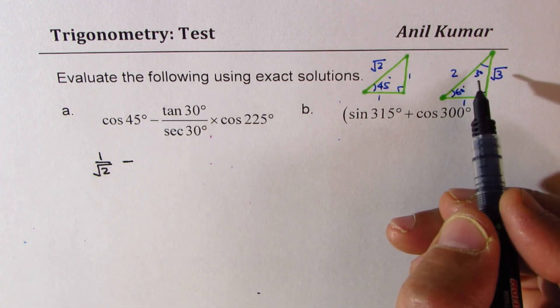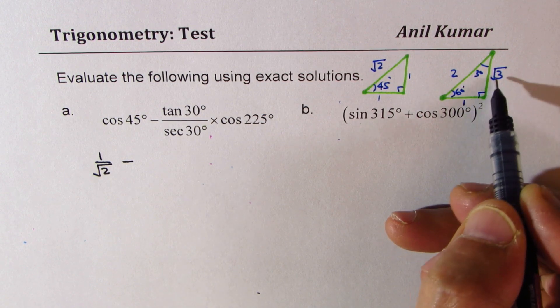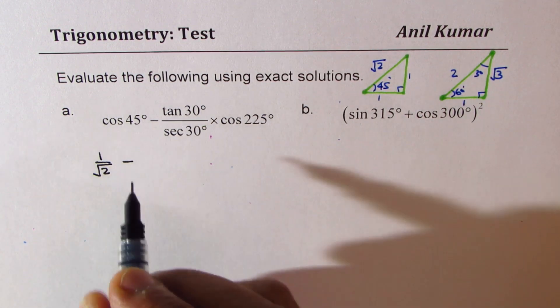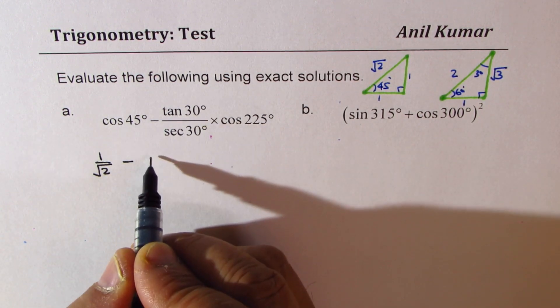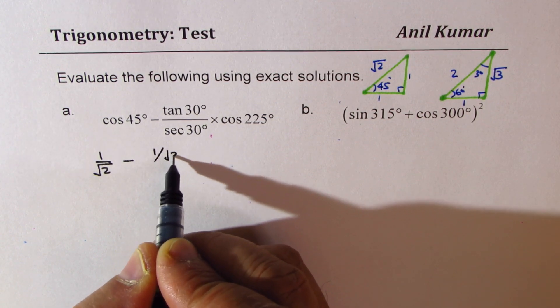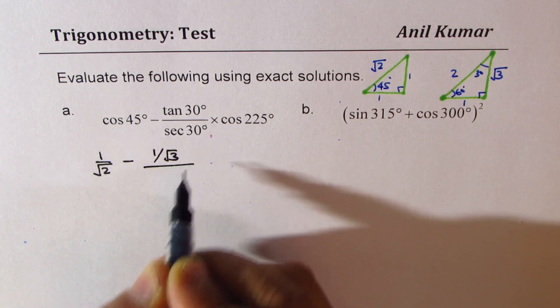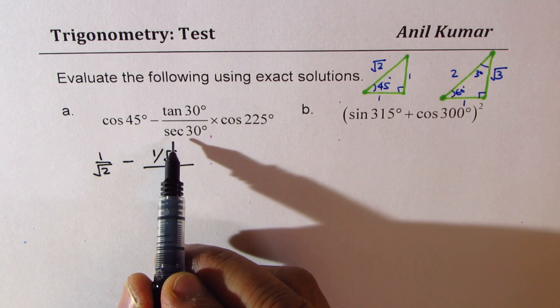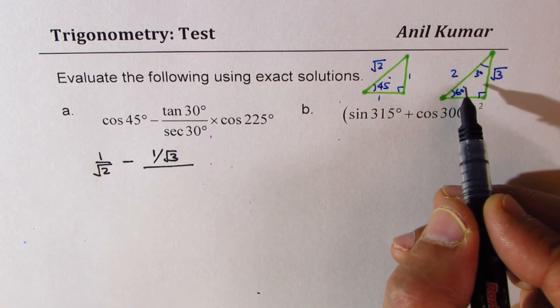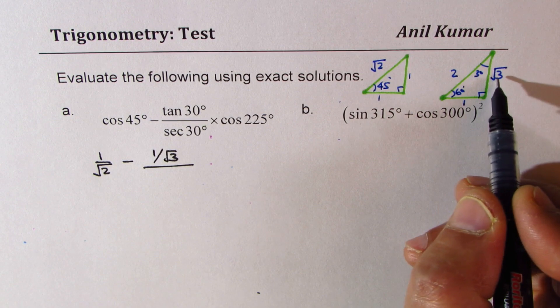Minus tan of 30 degrees - we look from opposite to adjacent, that is 1 over square root 3, so it is 1 over square root 3 divided by secant of 30 degrees.